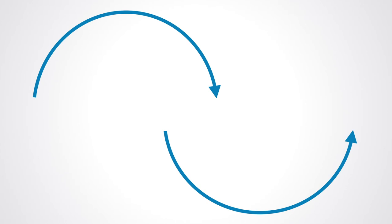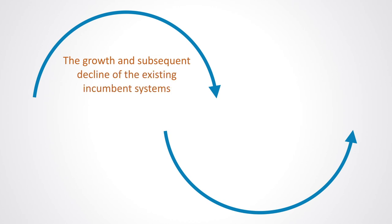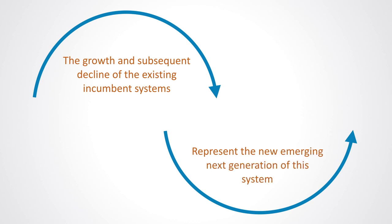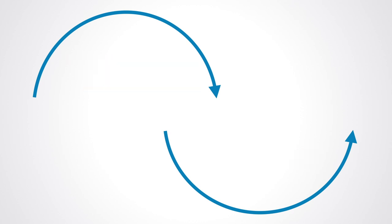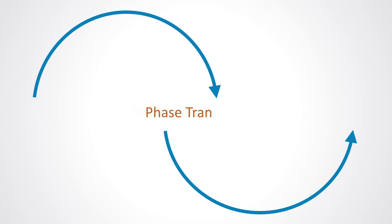The model, as a whole, describes two loops. The first is used to represent the growth and subsequent decline of the existing incumbent systems. The second loop is used to represent the new, emerging next generation of this system. The model describes the transition or process of non-linear change from the old system to the new. By non-linear, we mean that it is discontinuous — there is no linear set of steps that will take us from the old to the new, but instead there exists some phase transition that engenders a qualitative change in the process of getting from the old to the new.